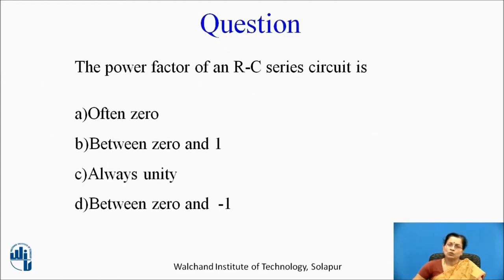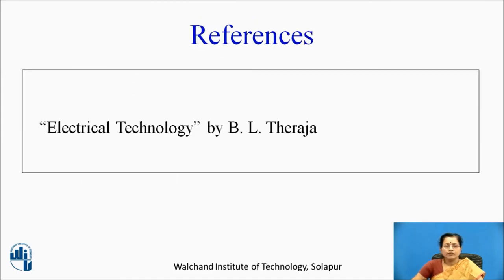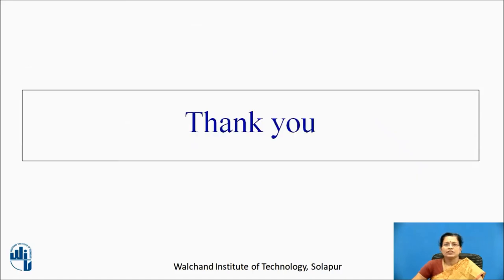Now pause the video and give the answer for this question: The power factor of an RC series circuit is A always 0, B between 0 and 1, C always unity, or D between 0 and minus 1. The answer is B, between 0 and 1. You can refer to the book Electrical Technology by B.L. Thareja. Thank you.